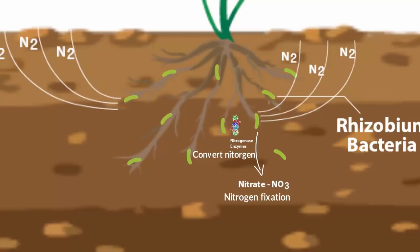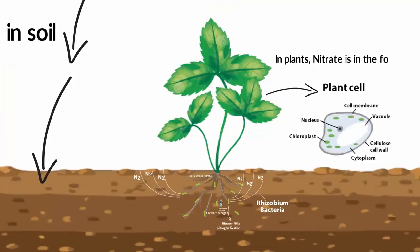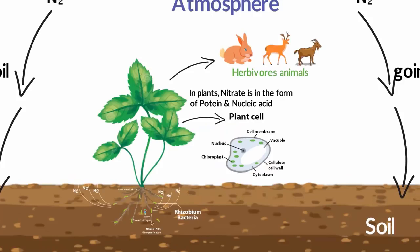Just remember, nitrogen fixation takes unreactive nitrogen from the air and turns it into a usable form. After nitrogen fixation, roots of plants absorb the nitrate. In the plant, they are in the form of protein and nucleic acids. Plants are producers, and herbivorous animals feed on plants for food and energy — that's how animals get the nitrogen they need by eating plants.